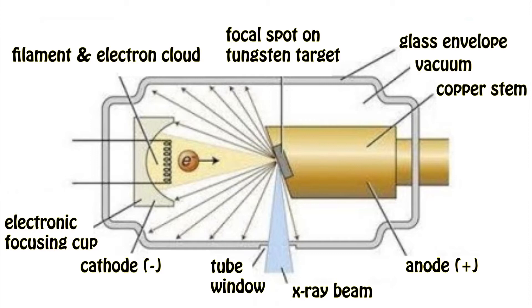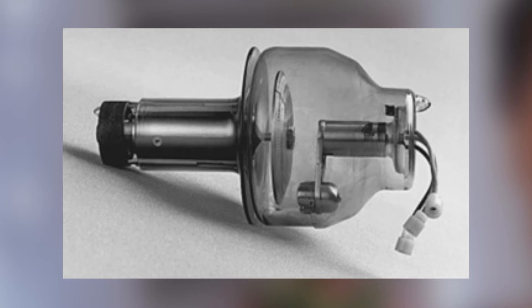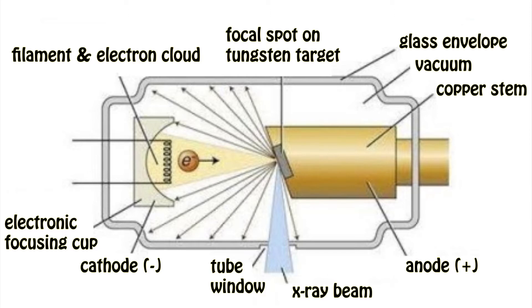Let's get into the structures of the tube in a bit more detail, as they form the basis of our explanation on how x-rays are produced. The structures are contained within the envelope, which provides vacuum, support, and electrical insulation. The envelope is usually made from glass, although some tubes use ceramic or metal. Also not pictured in the diagram, there is insulating oil, which carries heat produced by the anode away via conduction.